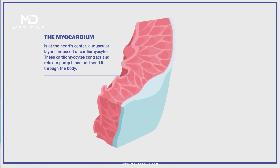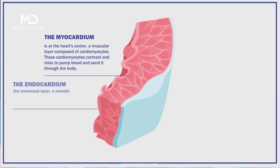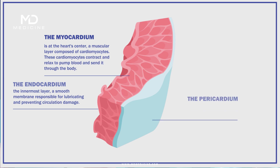Surrounding the myocardium are three distinct layers of tissue. The endocardium is the innermost layer, a smooth membrane responsible for lubricating and preventing circulation damage. The middle layer is the tunica media, composed of specialized muscle and elastic fibers. Finally, the outermost layer is the pericardium, a thin and flexible membrane that helps protect the heart from damage and infection.